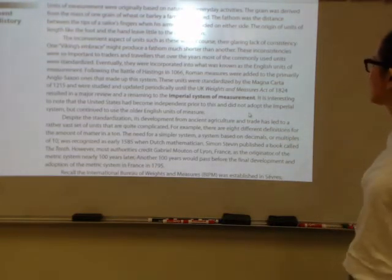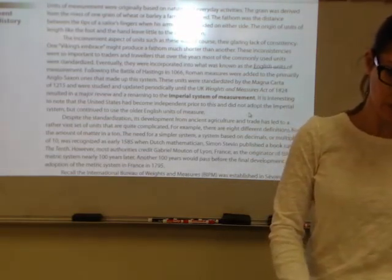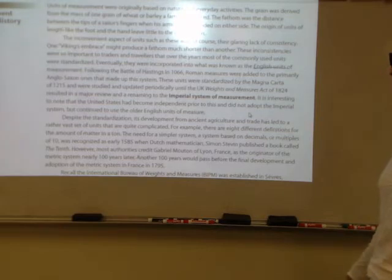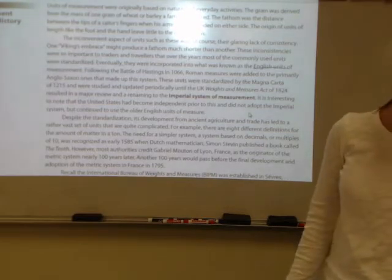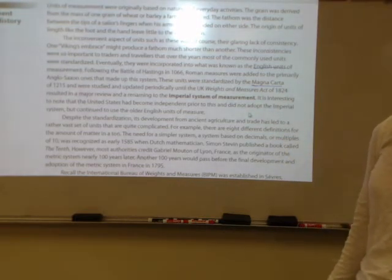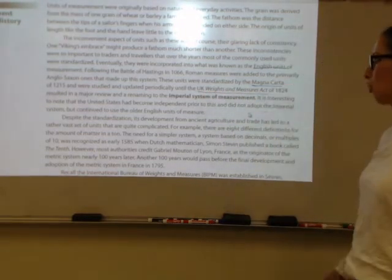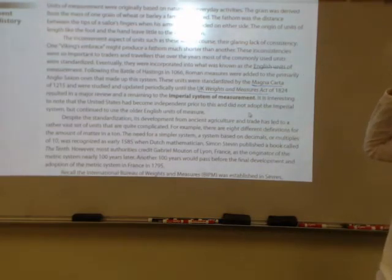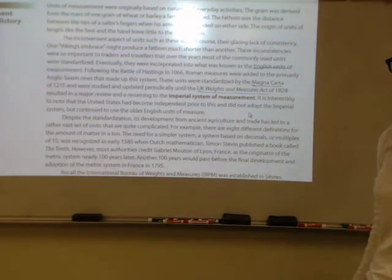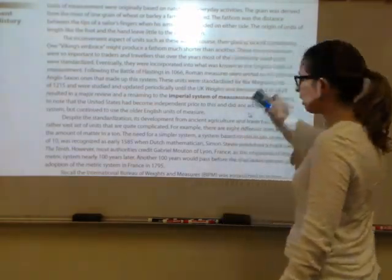Units were incorporated into what was known as the English units of measurement. Following the Battle of Hastings in 1066, Roman measures were added to the primarily Anglo-Saxon ones that made up this system. These units were standardized by the Magna Carta of 1215 and updated periodically until the UK Weights and Measurements Act of 1824, which resulted in a big review and renaming to the Imperial System of Measurement. The United States had become independent prior to this and did not adopt the Imperial System, continuing to use the older English units of measure.